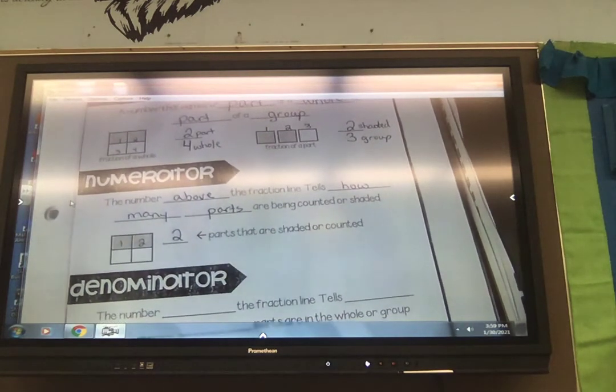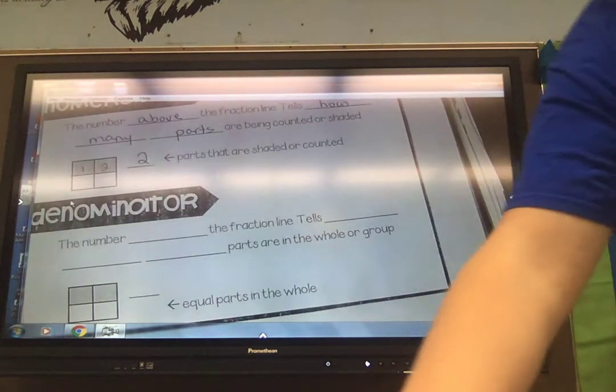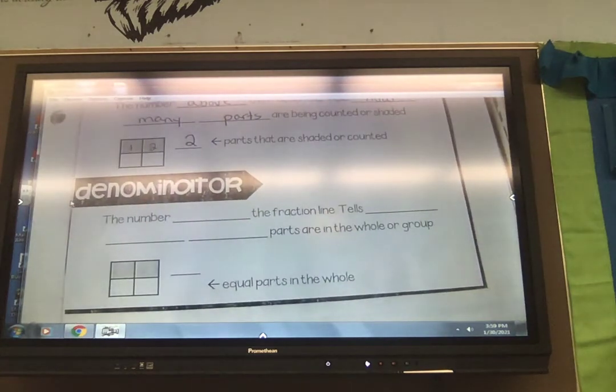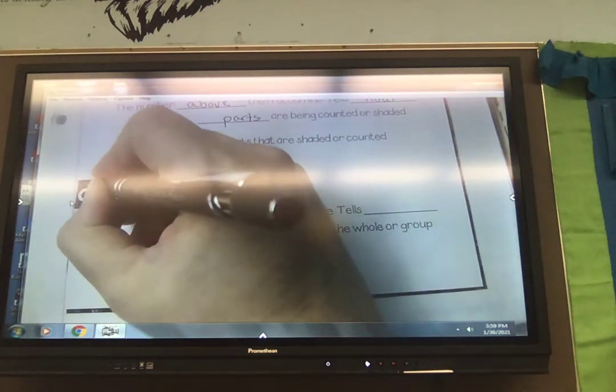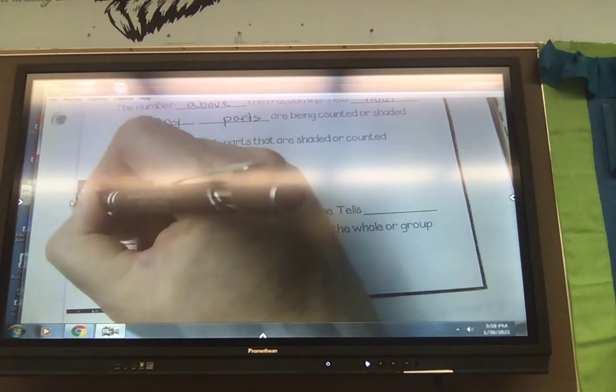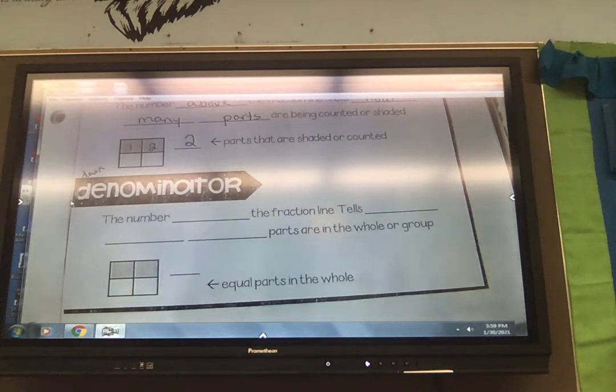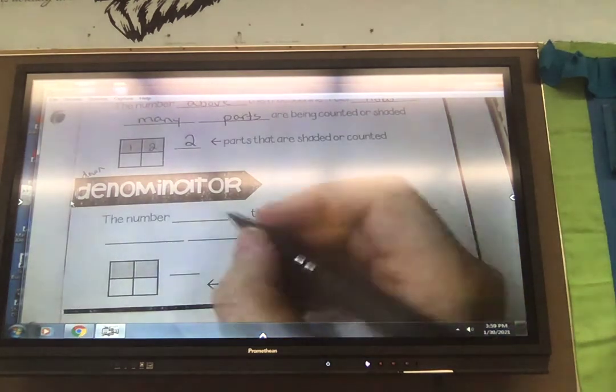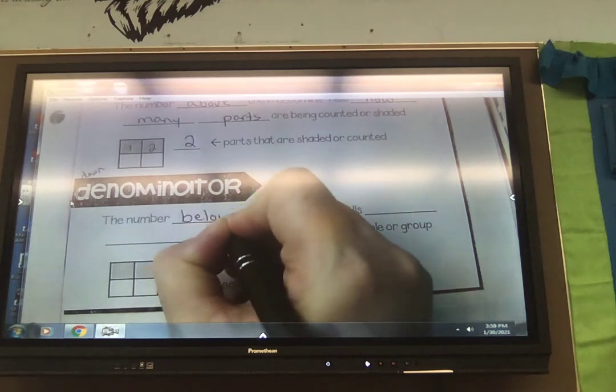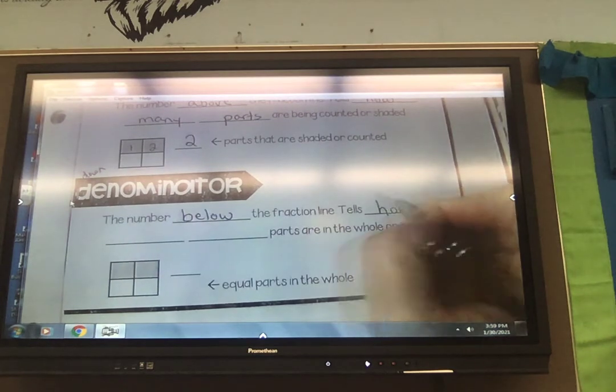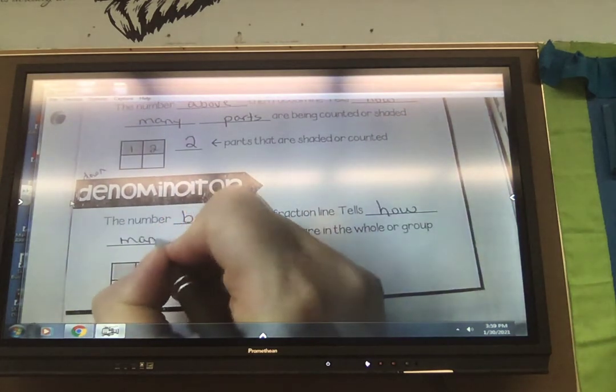Okay. We're going to talk about the bottom of our fraction, which is called the denominator. So third graders say denominator. Now a good way to remember denominator is with this D. Box out that D and write down. That's how I always remember the denominator goes down. The number below, because I just said it went down, so that would be below the fraction line. It tells how many total.